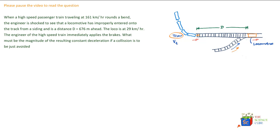So, at what deceleration should the train now move? How should the driver brake the train so that they just avoid collision with the locomotive?